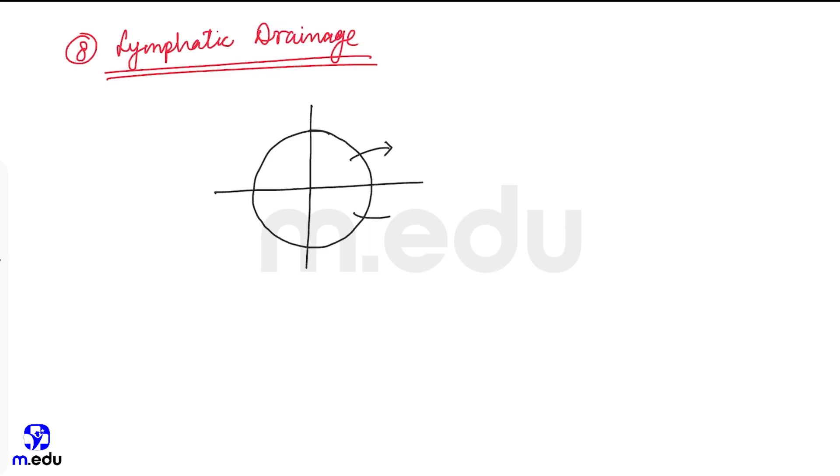Upper medial and lower medial drain into internal mammary nodes. These are internal mammary nodes. Here there is a situation of posterior axillary nodes. These are posterior axillary nodes. The lower lateral drains into posterior axillary nodes.